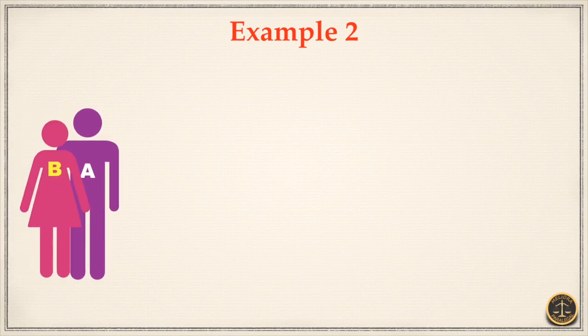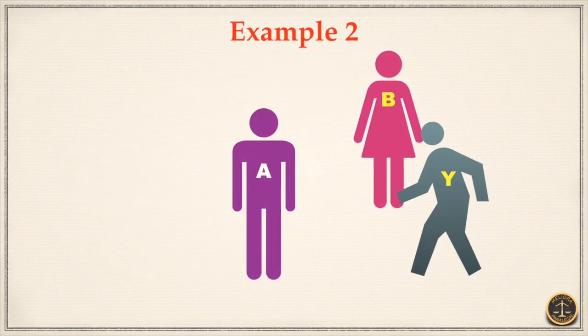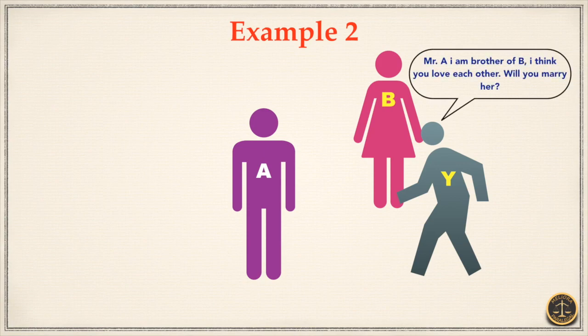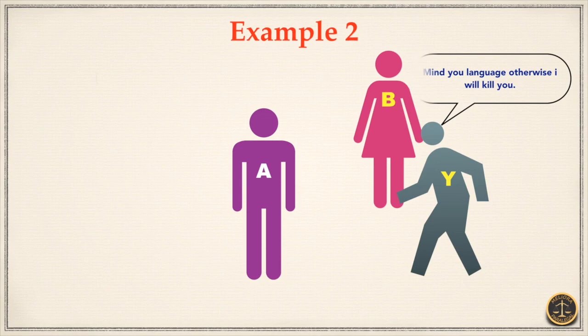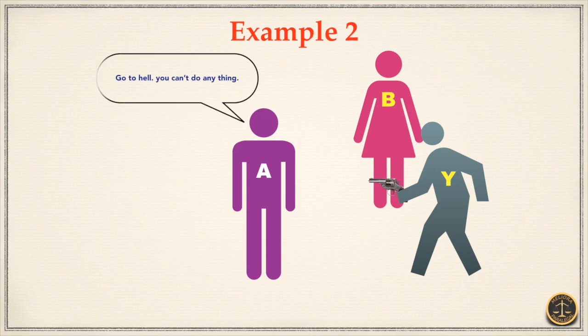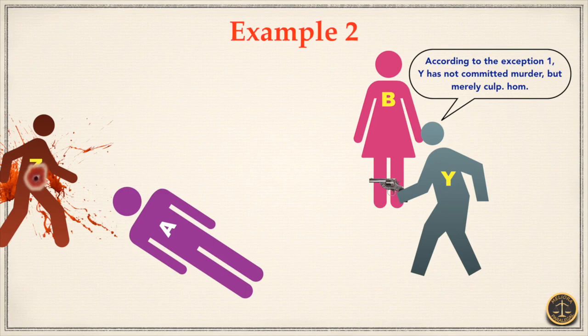Let's check out Example 2. Mr. A was in love with Miss G, sister of Y. Y came to know about it and met with A. Y asked A, 'Will you marry my sister?' A refused and also abused Y and his sister both badly. Y lost his control because of A's grave and sudden provocation and shot at A. But his aim failed and killed Z, neither intending nor knowing himself to be likely to kill Z, who was passing through. According to Exception 1, Y has not committed murder but merely culpable homicide.